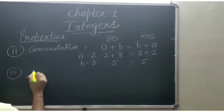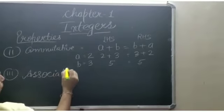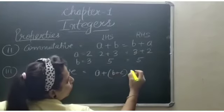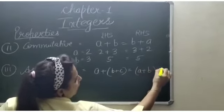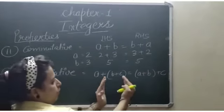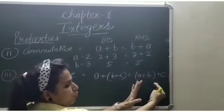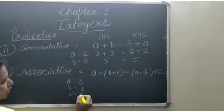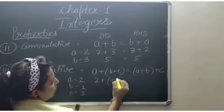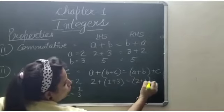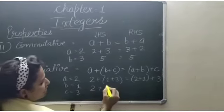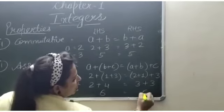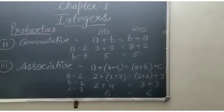Third property is associative property. Associative property states that A plus (B plus C) is equal to (A plus B) plus C. Here, you first solve the bracket. Suppose A is equal to 2, B is equal to 1, and C is equal to 3. Putting the values: 2 plus (1 plus 3) — that is 2 plus 4 equals 6. And (2 plus 1) plus 3 — that is 3 plus 3 equals 6. In both cases, LHS is equal to RHS.